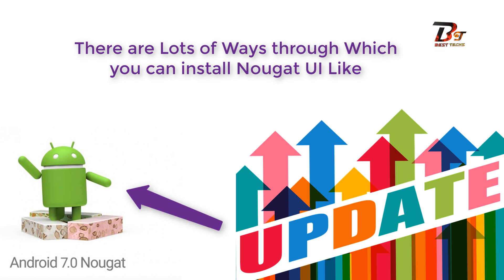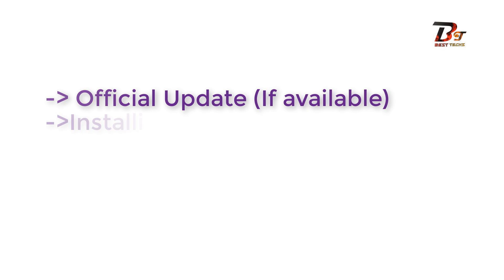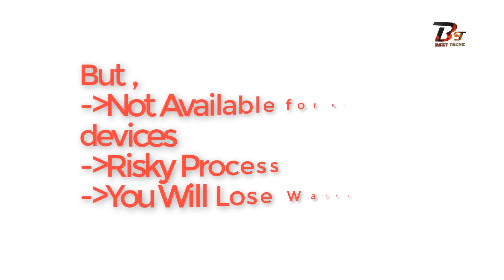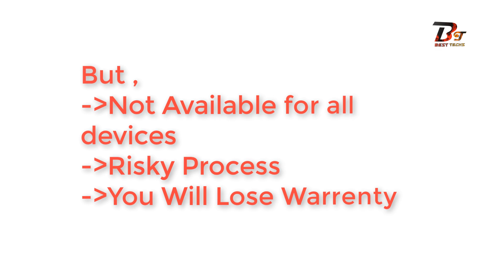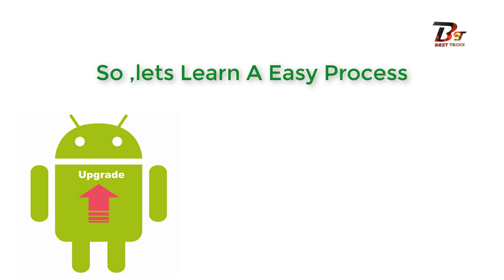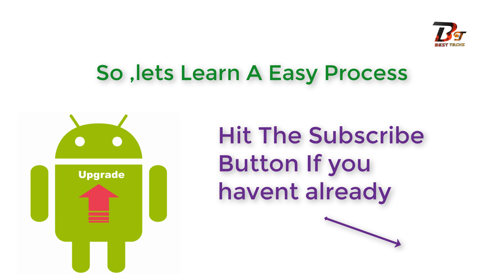As you may already know, there are a lot of ways by which you can install Android Nougat UI on your device, like an official update if available, or installing a custom ROM which does require unlocking the bootloader, rooting, installing custom recovery, etc., which will of course void your warranty. So in this video I am going to show you how to install Android Nougat UI on your device without voiding your warranty.